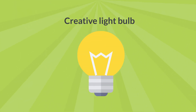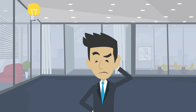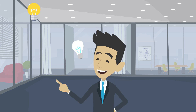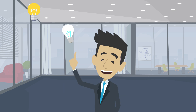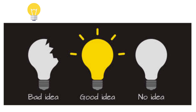Creative Light Bulb: A character thinks for a while and suddenly gets a great idea — a light bulb automatically lights up directly above the character's head. There is often a character with an index finger pointing up. Good, bad, and dim light bulbs indicate good, bad, and no idea, respectively.